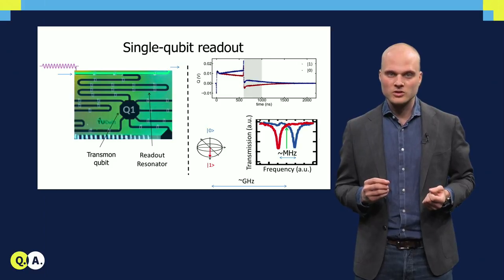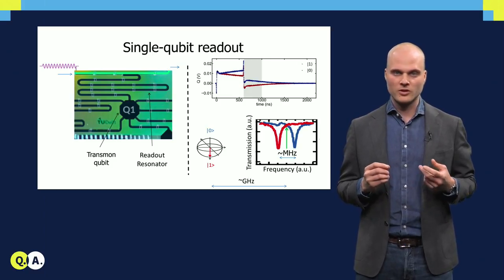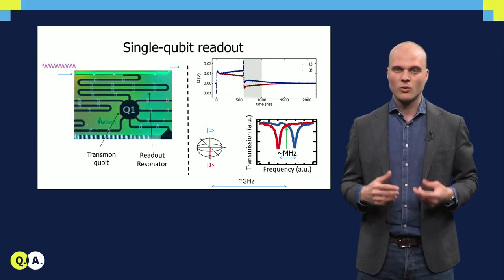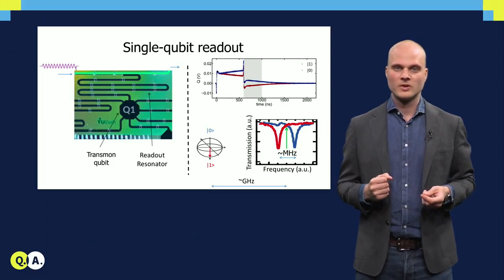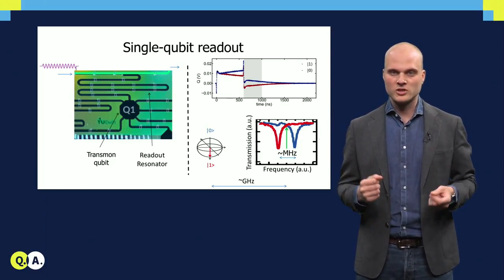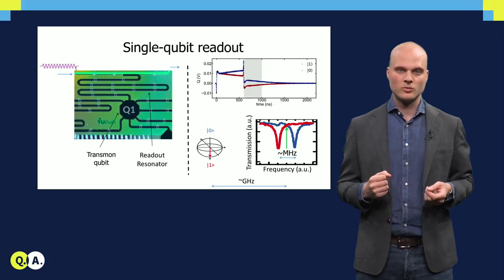Here, we show the output voltage as a function of time for the qubit in the ground state and the excited state, which clearly look different. Hence, we are able to distinguish and measure the two different qubit states.